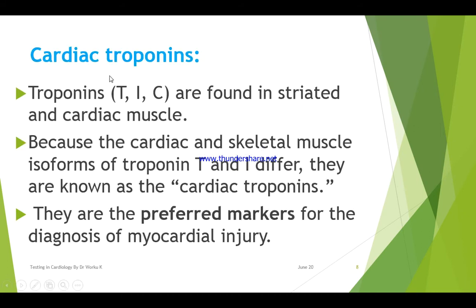Another very important cardiac biomarker is cardiac troponin. We have subtypes of troponin: troponin T, troponin I, and troponin C, which are found in skeletal muscle and cardiac muscle. Because the cardiac and skeletal muscle forms of troponin T and I differ, they are known as cardiac troponins and are the preferred markers for the diagnosis of myocardial injury.